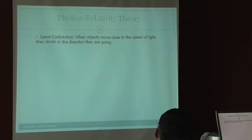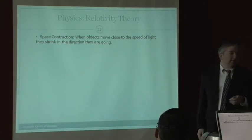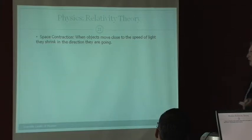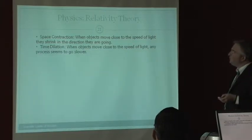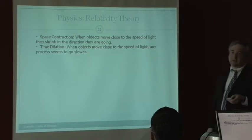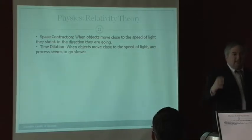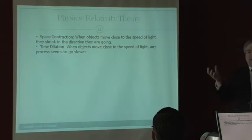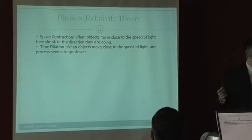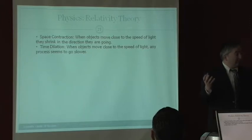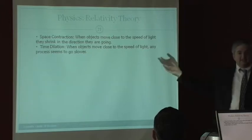And every single time mechanism that I have on this clock, including my heart rate, is going to go slower. And so that's a shocking thing. Space contraction. When objects move close to the speed of light, they shrink in the direction that they're going. Time dilation. When objects move close to the speed of light, any process seems to go slower. And by the way, this time dilation, they actually do experiments. They take clocks, nuclear clocks, and they pair them up, and they put one on an airplane. Take the airplane, fly it around to the earth a few times. Come back, and they see that the clock is a different experience.